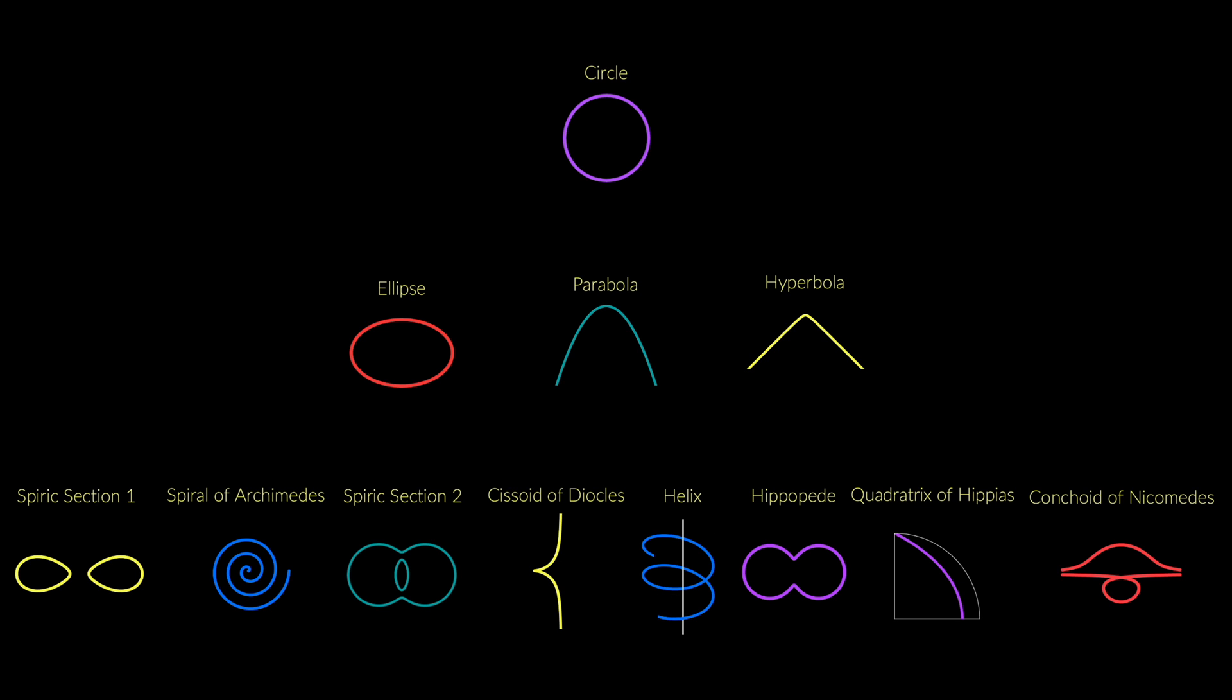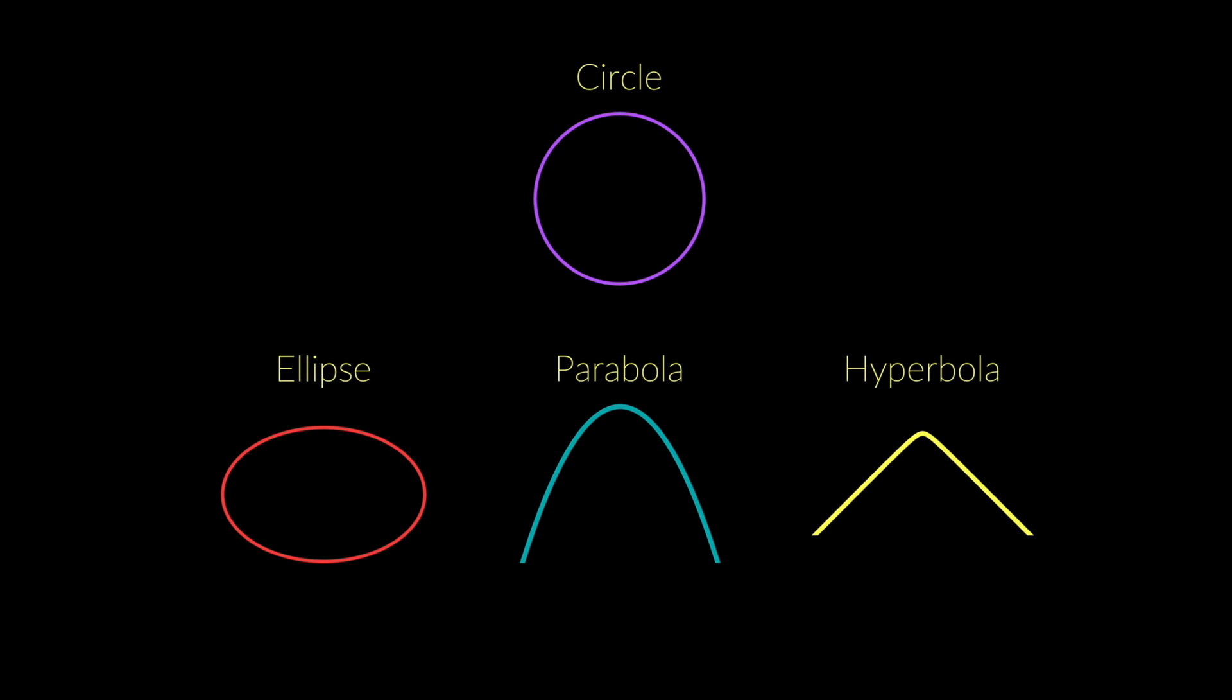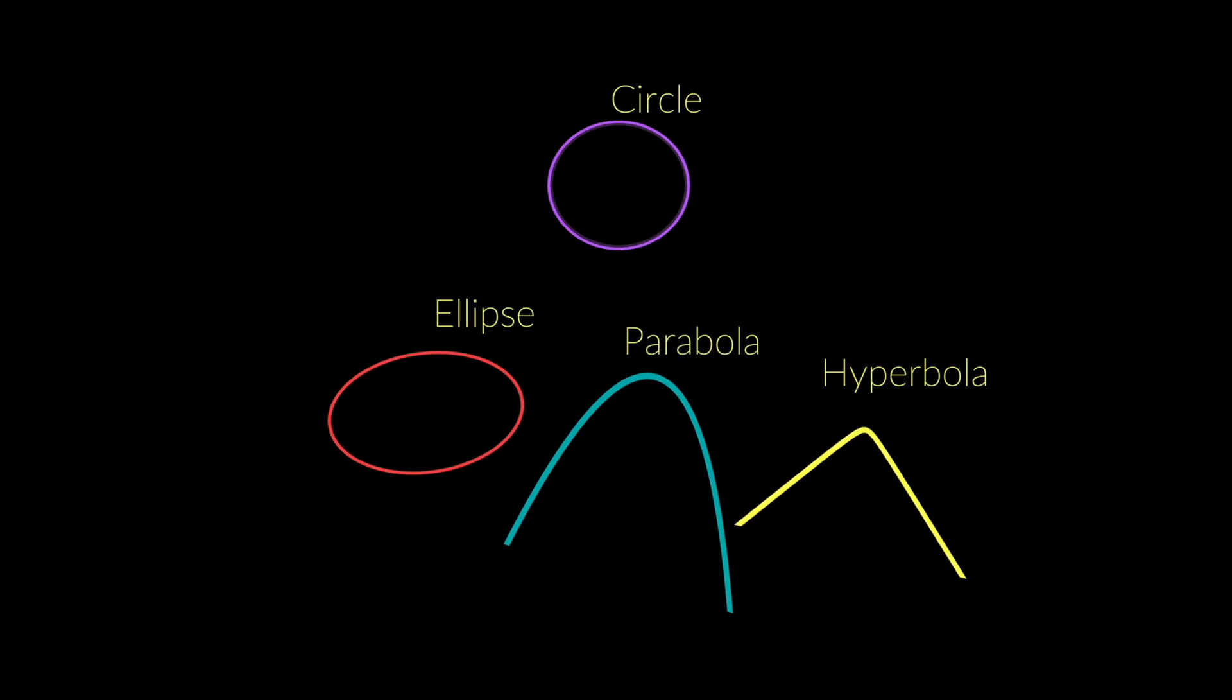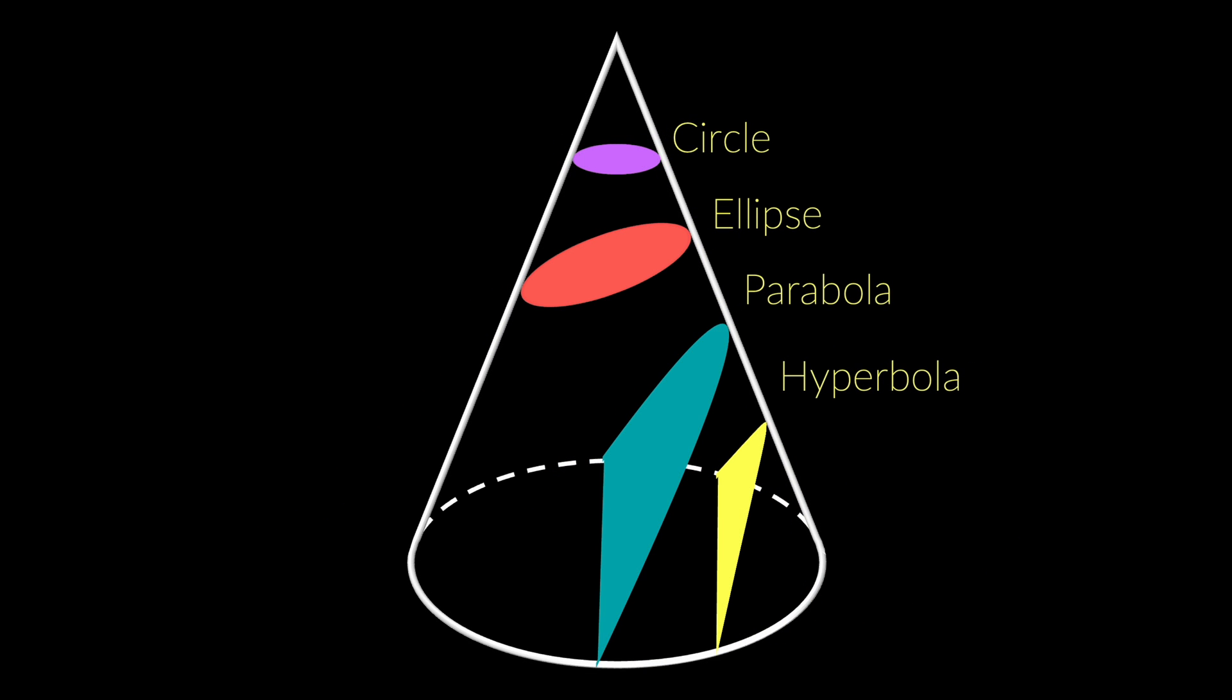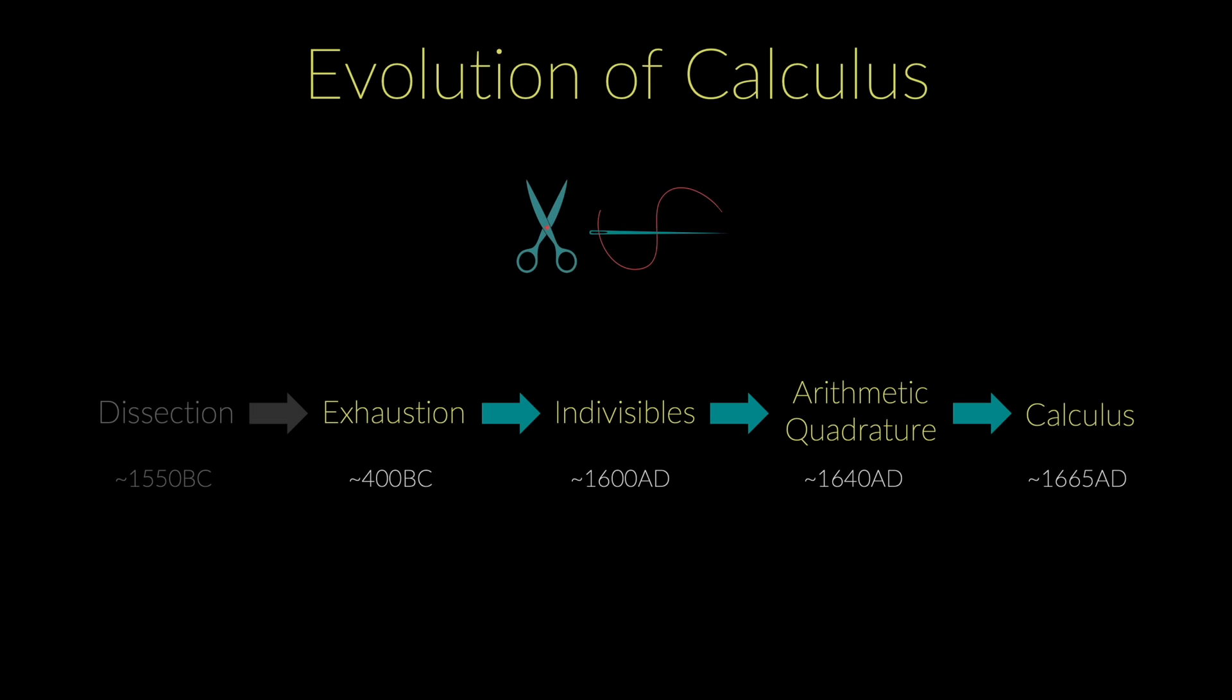They focused most of their attention on the top two ranks, which are collectively known as the conic sections, or the curves that are obtained by slicing a cone at different angles. But how did the ancient Greeks study those curves? They did so by using the second method on our list, the method of exhaustion.